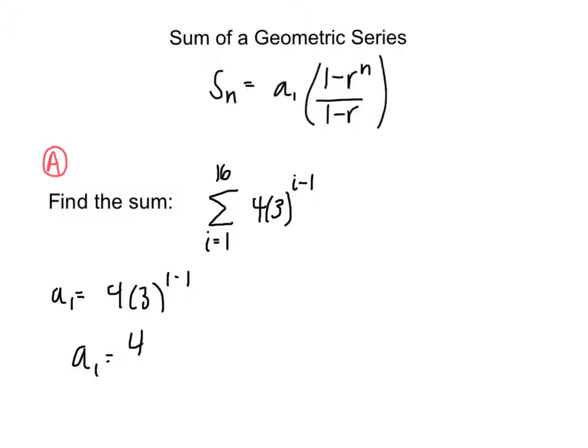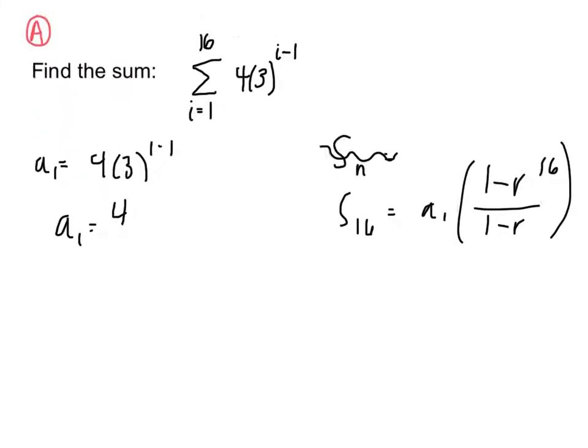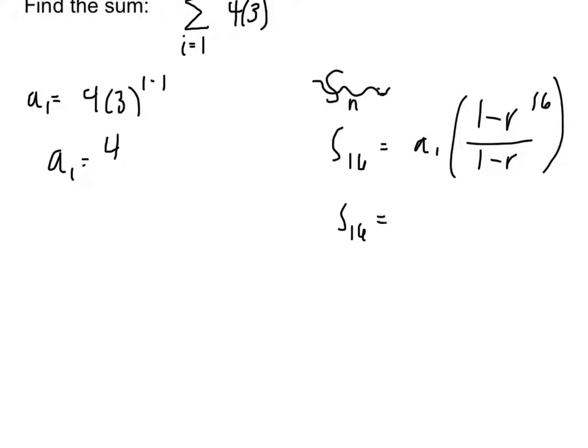We need to solve for s of 16 into our sum of a geometric series formula. So we have s sub 16 equals a sub 1, 1 minus r to the 16 over 1 minus r. Now we know that a sub 1 equals 4. We can solve for r by saying r is 3. So 3 to the 16th. And for s sub 16, the sum of the series is 86,093,440.